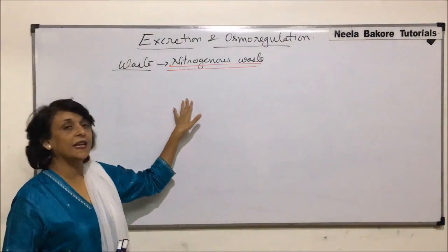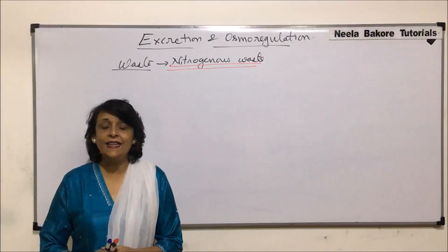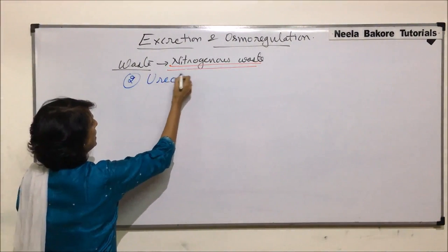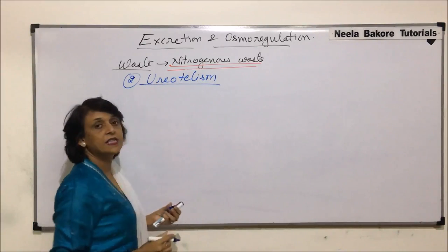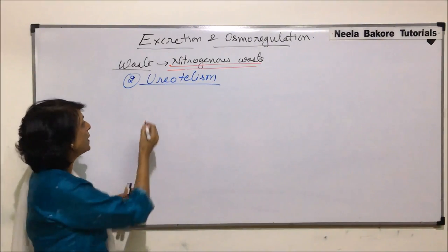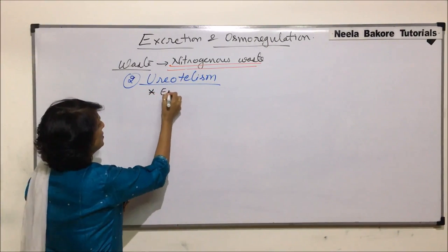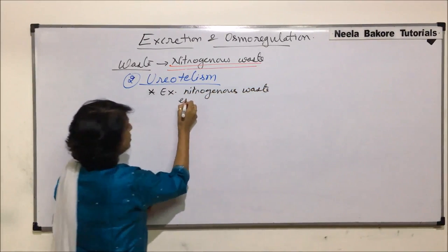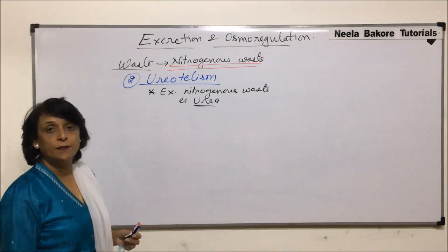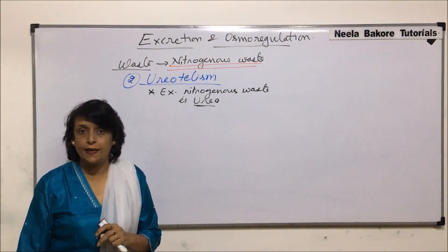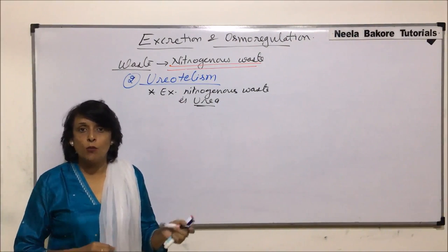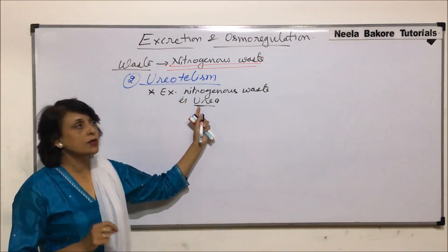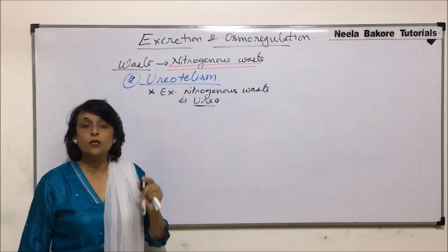The next type of excretory nitrogenous waste to be eliminated is urea. We have discussed ammonotelism, so now we will talk about the second one — ureotelism. The term ureotelism is used when the excretory nitrogenous waste is urea, and such organisms are known as ureotelic. When ammonia is excreted the process is ammonotelism and those organisms are called ammonotelic.